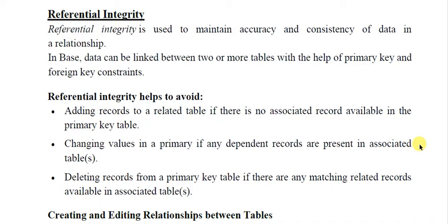Referential integrity helps to avoid: adding records to a related table if there is no associated record in the primary key table; changing values in a primary key if dependent records are present in associated tables; and deleting records from a primary key table if there are matching records in associated tables. For example, if you have a table called 'admission' with student details and a table called 'examination', deleting a student record from the admission table will warn you that this record is related to the examination table, because the same student has marks in the examination table — so you cannot delete it.